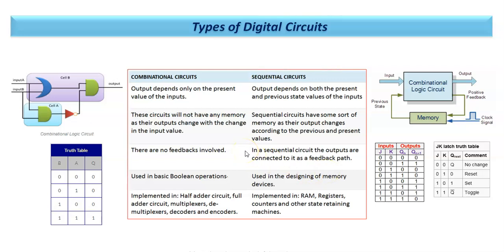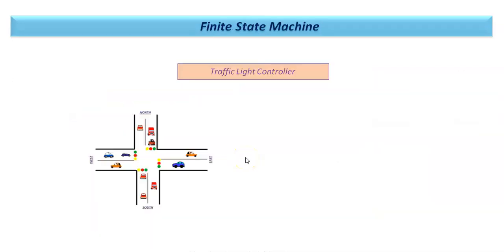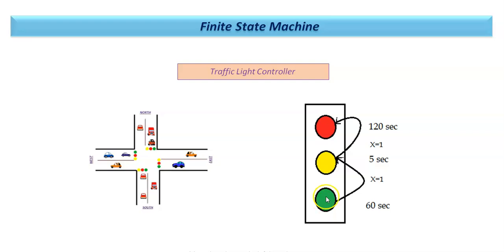FSM — Finite State Machine — is a sequential circuit. A common real-life example is the traffic light. You can see four lanes with cars, and the signal is red, green, and yellow. States change every time: first it is in the green state, then it transitions to yellow — a five-second transition — and after yellow it changes to red, meaning stop. So it changes state from green to yellow and yellow to red, taking decisions when to change. This is called a Finite State Machine.